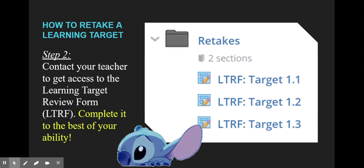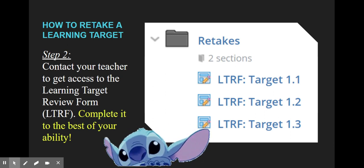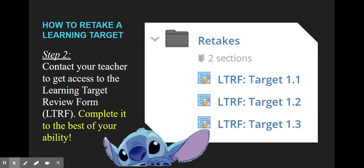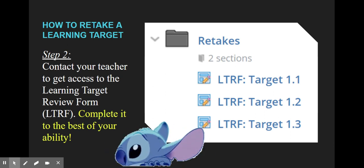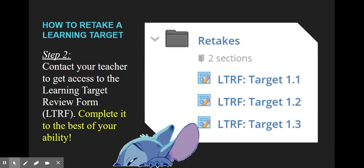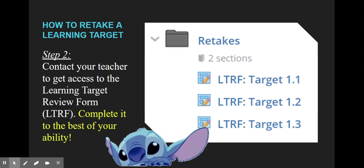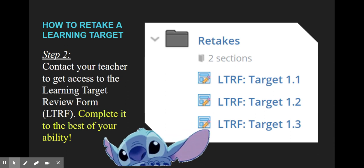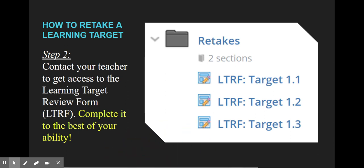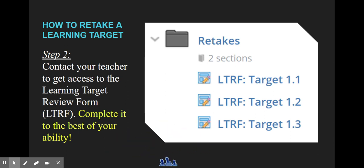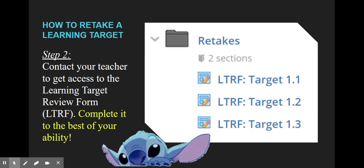Step two is to contact your teacher to get access to the learning target review form, and so your teacher's gonna go check your materials to make sure everything was done and then they're gonna go ahead and open up a review form. Now this isn't your retake—this is to get you to study for that retake, and so it's gonna have you do extra steps. So retakes are extra work. You're gonna have to go and do extra things in order to earn a retake. So it's best if you don't have to do a retake, but if you do, this is just to get you to study and to work hard to really understand the material. So make sure you complete each of these learning target retake forms to the best of your ability.